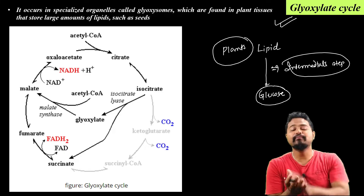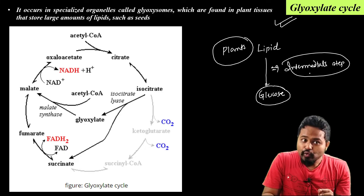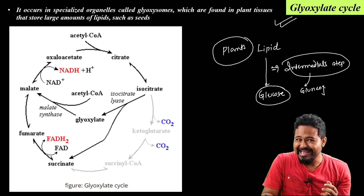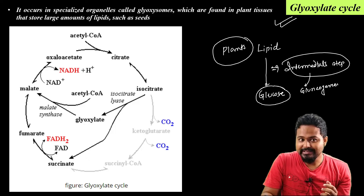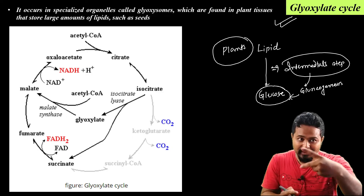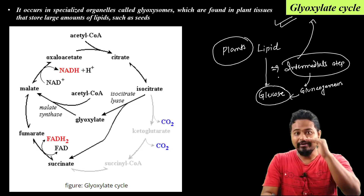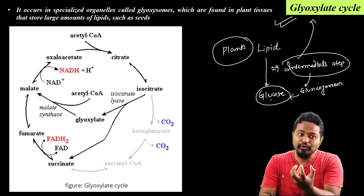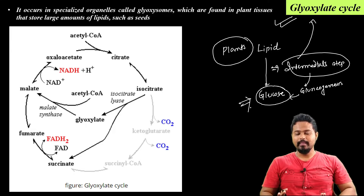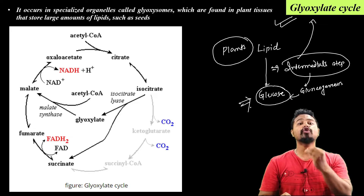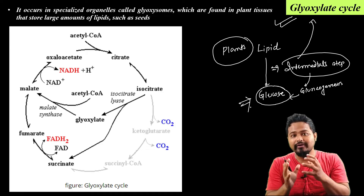This cycle is a major step because it is part of the process of gluconeogenesis. The next class will cover gluconeogenesis. This is why it is important — to convert lipid into glucose.